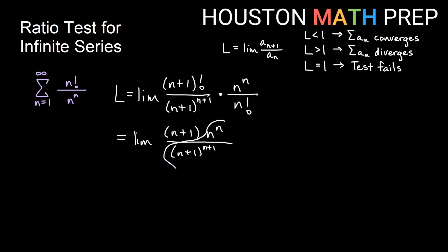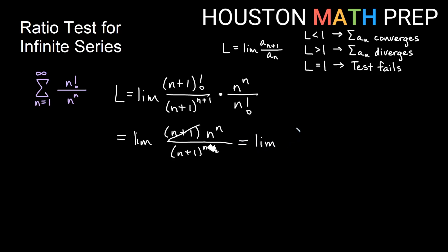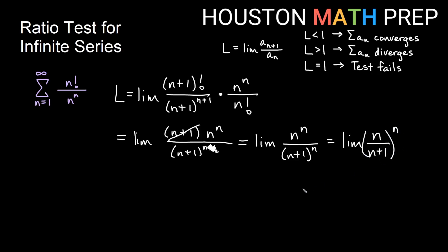The exponentials can't be reduced directly since they have different bases and powers. However, after reducing the factorials we have an (n+1) factor on top and (n+1)^(n+1) on the bottom. Using properties of exponents, one copy of (n+1) cancels, leaving n^n over (n+1)^n. Since they share the same exponent, we can write this as (n/(n+1))^n.